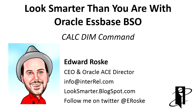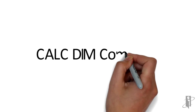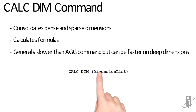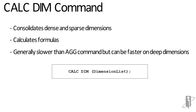The calcdim command is a more powerful yet generally slower version of the ag command. Whereas ag only does sparse dimensions with no formulas, calcdim will work on either dense or sparse dimensions, and if it finds a stored member with a formula it will calculate that too. Because ag ignores members with formulas and only works on sparse dimensions, ag is quite often faster when aggregating sparse dimensions than calcdim.